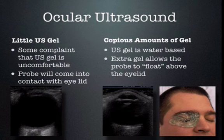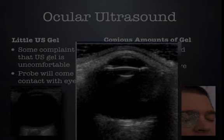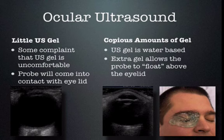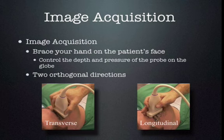The other advantage of using a lot of gel is that you can see the near field much better. Probes have a near field and a far field, and having that little bit of gel increases the ability to see in the near field. On the image with more gel, you can see the eyelid and the tarsal plate — the hypoechoic stripe running in the eyelid — very well. With very little gel, you cannot see the eyelid or the tarsal plate. If you're only interested in the retina and the posterior portions of the globe, a little gel works well. If you're interested in the anterior globe or anterior chamber, use a lot of gel.